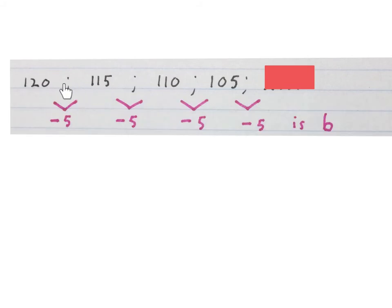If you take 115 minus 120, you'll see it's minus 5. 110 minus 115 will give you a minus 5. So we have a constant difference of minus 5, which will be my b.